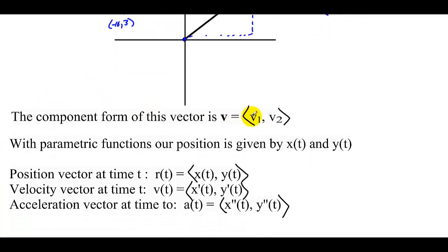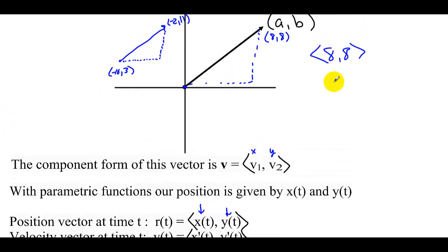The component form of this vector is chevron v1, v2 — in other words the x and the y. With parametric functions, our position is given by x of t and y of t, so the position vector at any time t is x(t) and y(t). For example, when t was 2, x was 8 and y was 8.